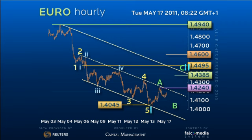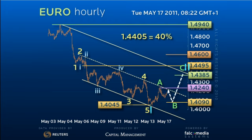In fact, given the analogy's 40% corrective target of 144.05, this highlights 140.90 as a potential low to match the C equals 1.618 of A with 144.05. 140.90 is also the short term C equals A on the downside today.